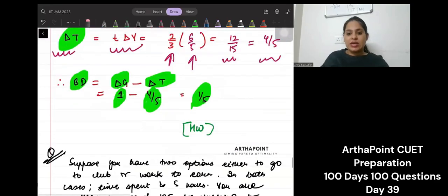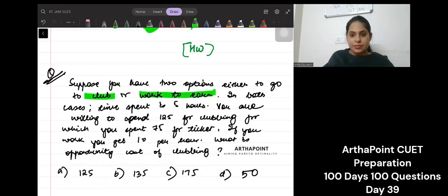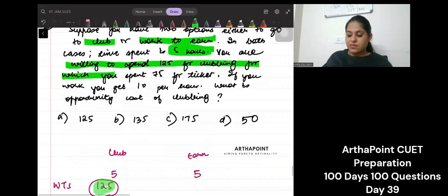Okay. Take this as your homework question, please. You have two options, either to go to a club or work to earn. In both cases, you have 5 hours. You are willing to spend 125 for clubbing.